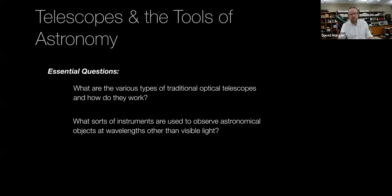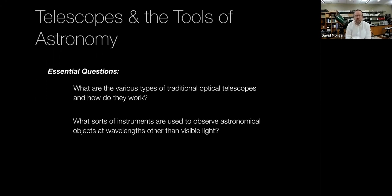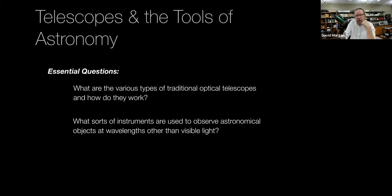Today I want to talk about telescopes. Since we've been talking about the tools of astronomy conceptually, I want to talk about the actual physical tools that astronomers use. One of the earliest tools, and tools we still use today, is the telescope — a regular old optical telescope that uses visible light. We'll talk about different types of telescopes, examples throughout history, and currently used telescopes, and I'll do a little show and tell here in the lab of some of the telescopes we have here at RBC.